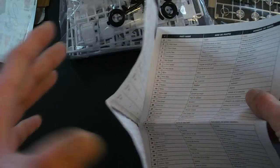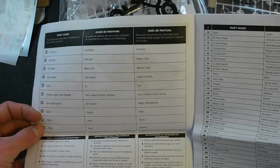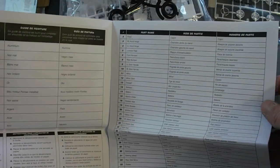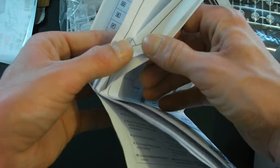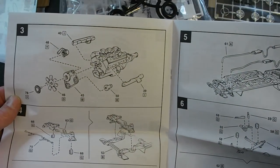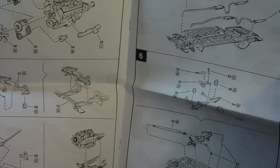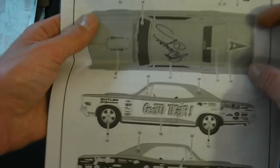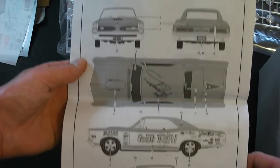Take a look at the decals in a second. Have your paint guide as well as the parts count. And then you have the exploded diagrams of all the parts here. And on the back you have the decal placement.